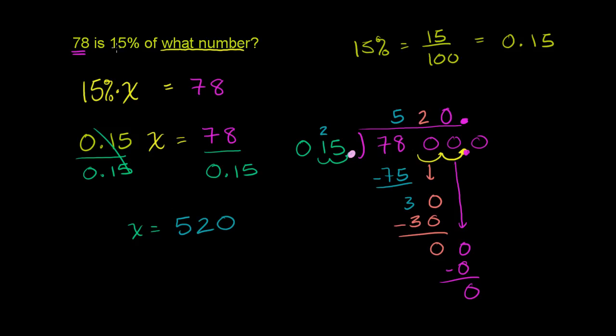So 78 divided by 0.15 is exactly 520. So x is equal to 520. So 78 is 15% of 520. And if we want to use some of the terminology that you might see in a math class, the 15% is obviously the percent. This is the percent.